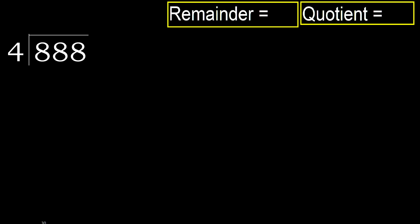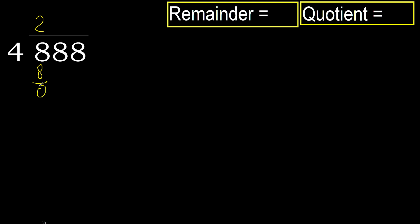888 divided by 4. 8 is not less, therefore with 8. 4 multiplied by which number is nearest to 8 but not greater? 4 multiplied by 3 is 12, which is greater. 4 multiplied by 2 is 8, which is not greater. Subtract: 8 minus 8 equals 0.